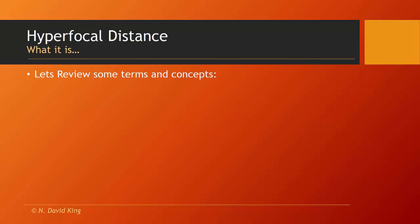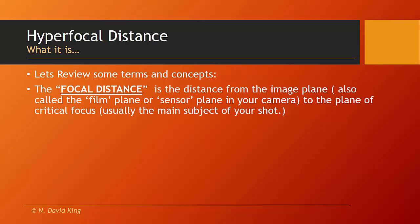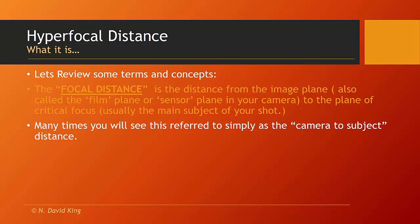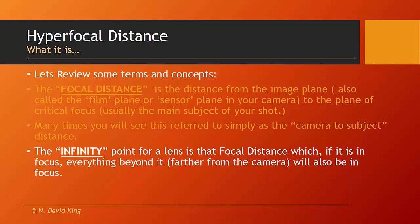First of all, in order to make sense of it, we need to review some of the terms and concepts from our depth of field presentations. The focal distance is the distance from the image plane — sometimes also called the film plane or the sensor plane of your camera — to the plane of critical focus, which usually is the main subject of your shot. Many times you're going to see this focal distance simply referred to as the camera-to-subject distance, but specifically it would be from the image plane to the plane of critical focus.